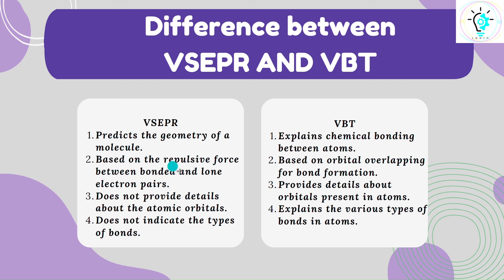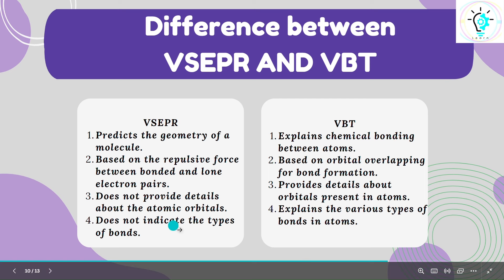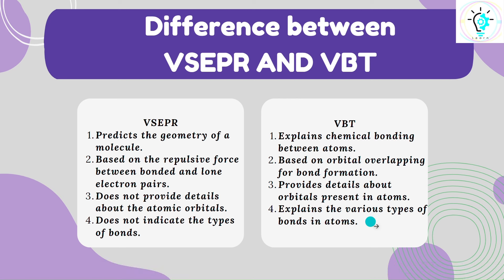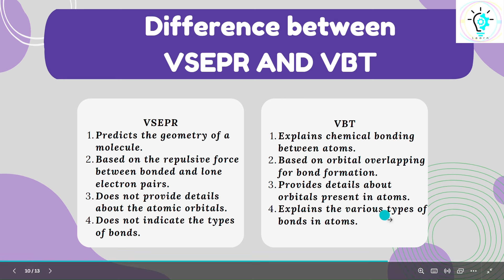VSEPR is based on repulsive force between bond pairs and lone pairs, whereas VBT is based on overlapping of orbitals for bond formation. VSEPR does not provide any details about the atomic orbitals, whereas VBT provides details about the atomic orbitals present in the atom. VSEPR also does not indicate the types of bonds, however VBT explains whether the type of bond is sp, sp², or sp³ hybridized — giving us the various types of bonds in an atom.